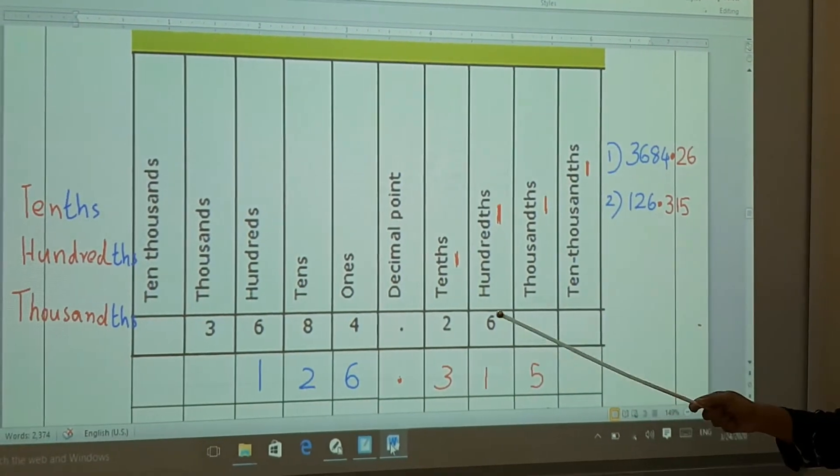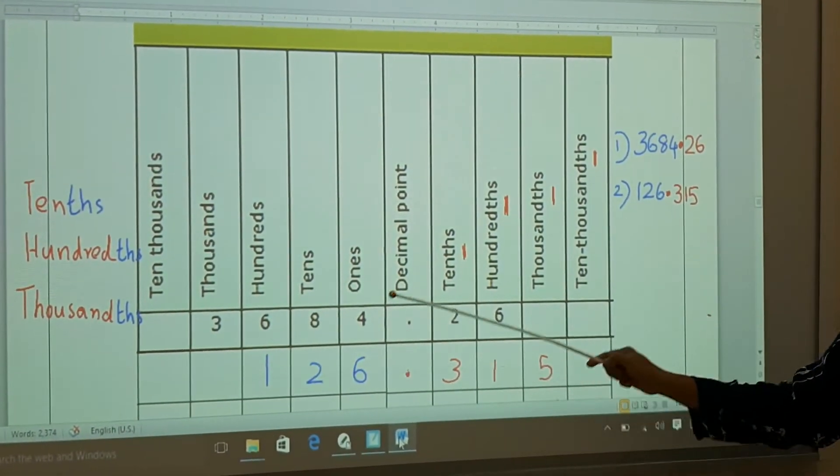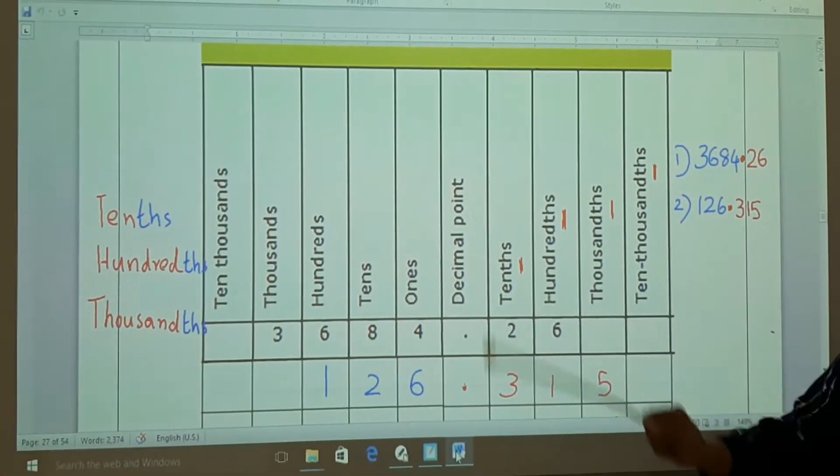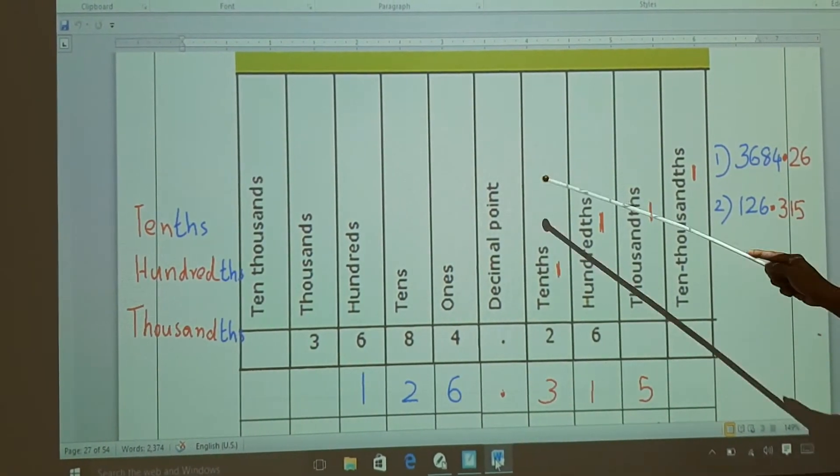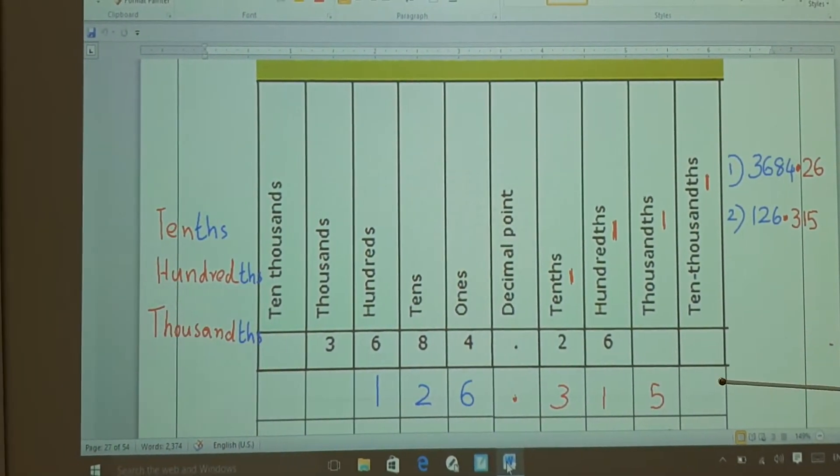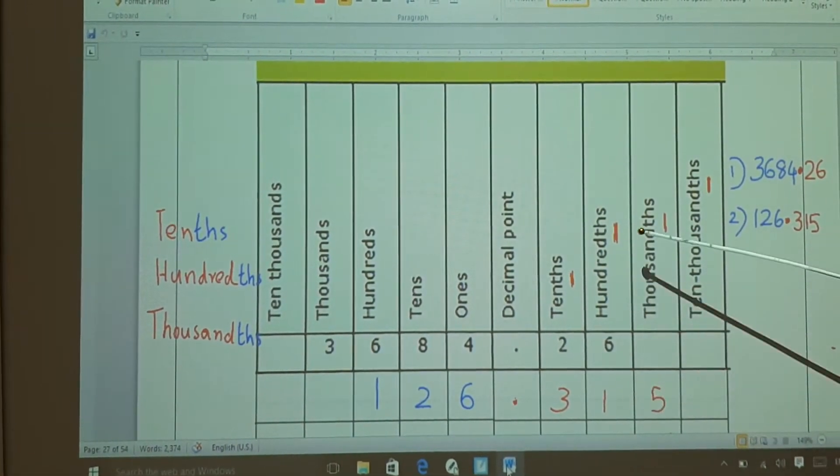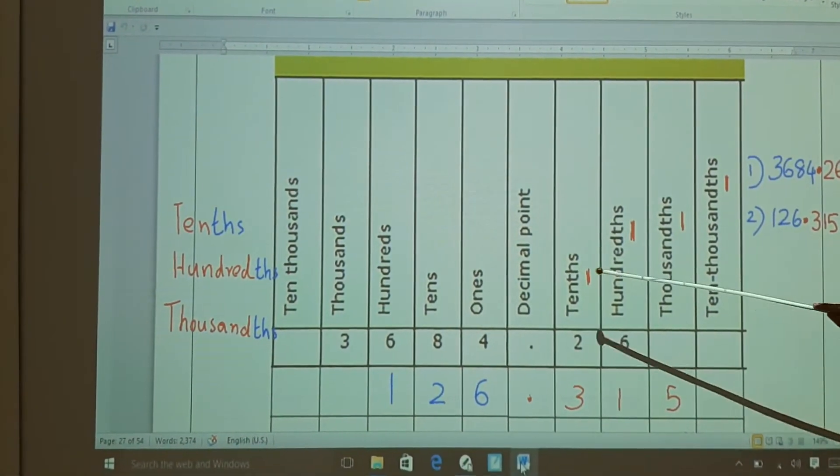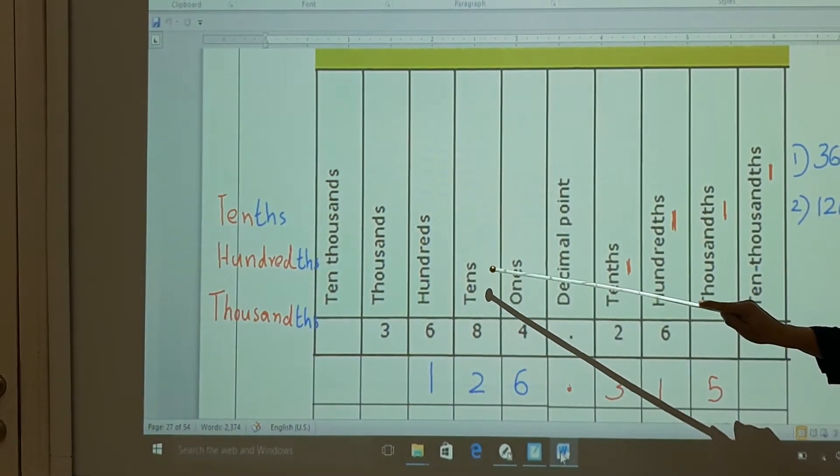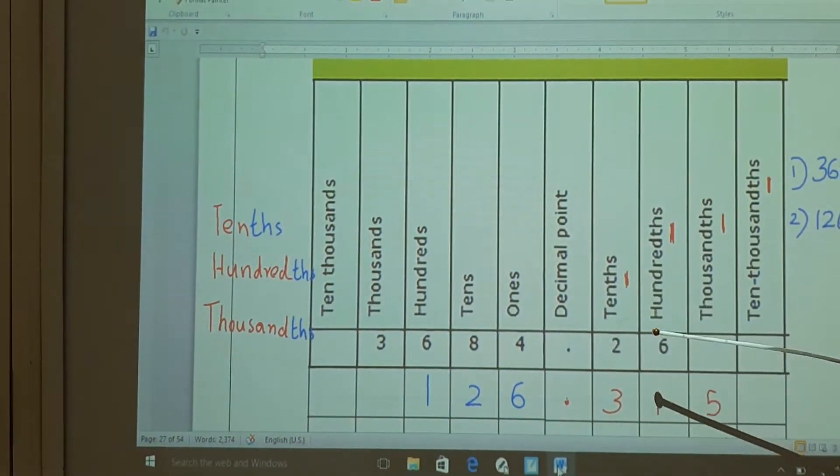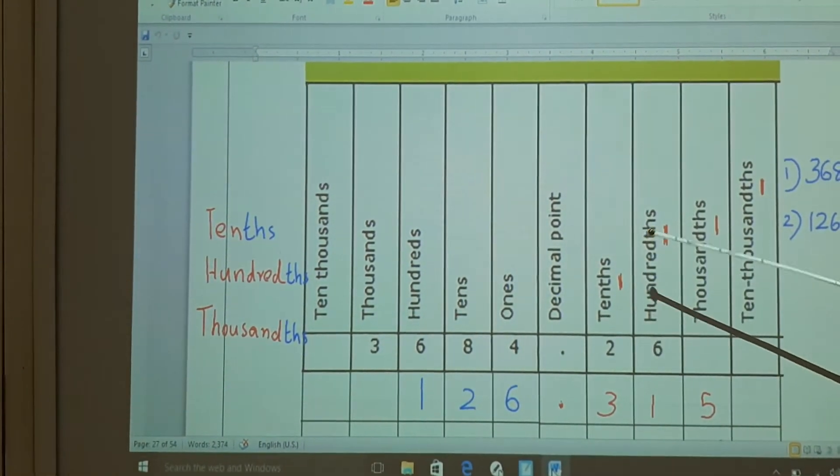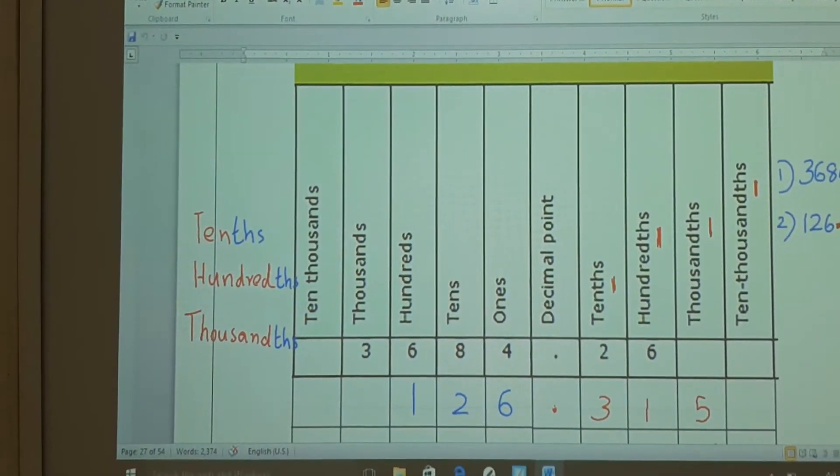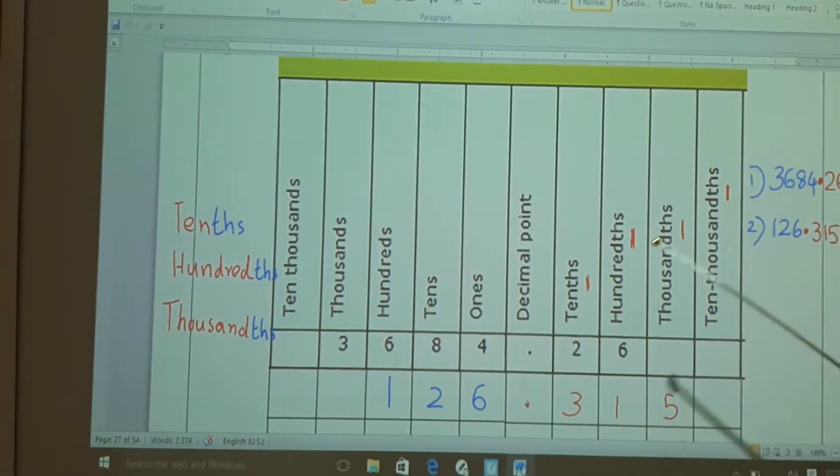First, let us discuss about the place value chart for decimals. We know the whole numbers we say as ones, tens, hundreds, thousands, ten thousands, like that. Coming to decimal, see, the decimal point is here. After the decimal, it becomes tenth, hundred, thousands, ten thousands. So what is the difference? Here we write tens as T-E-N-S, but when it comes to decimal, after decimal it becomes tenth: T-E-N-T-H-S. I will give you one example here.